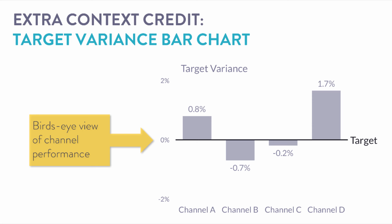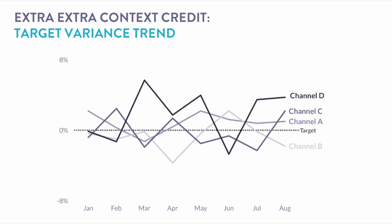If you want some extra context credit, you can actually break this down further and understand what's happening over time at this bird's-eye view with a target variance trend. Here we have each channel's variance by month, which explains a little more about the peaks and valleys of what's happening over time. These are two views that, if you had the opportunity, would make a great choice to set up the story going into the larger view.